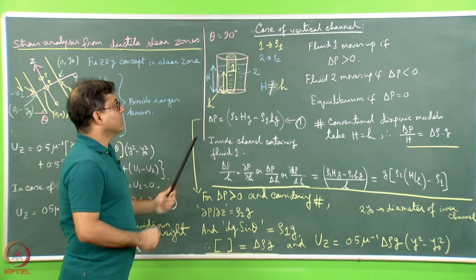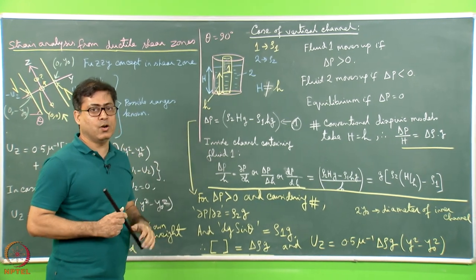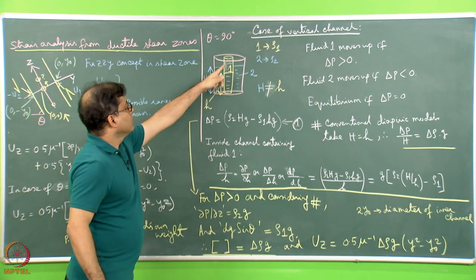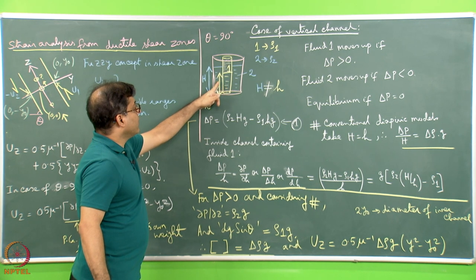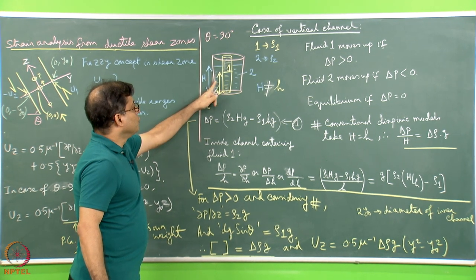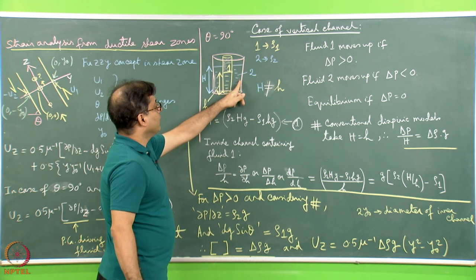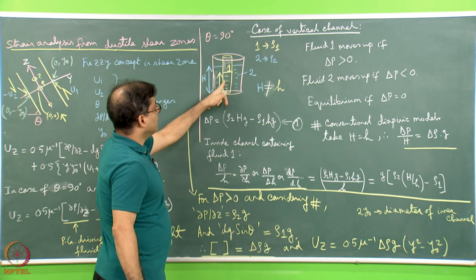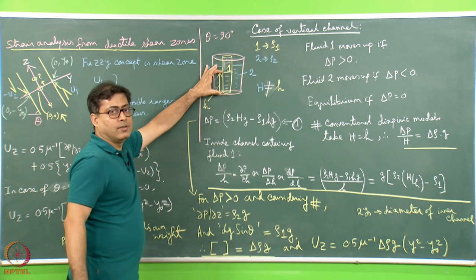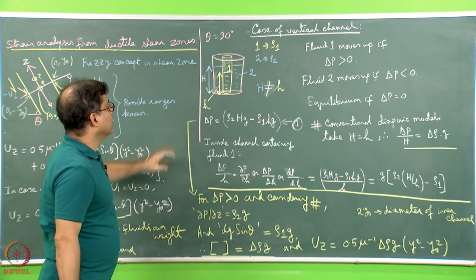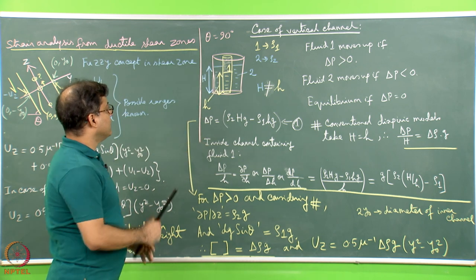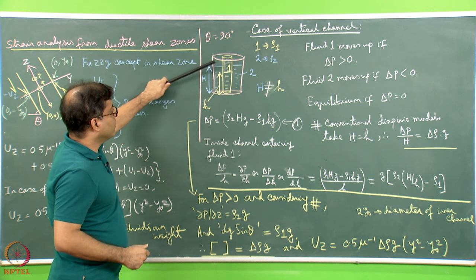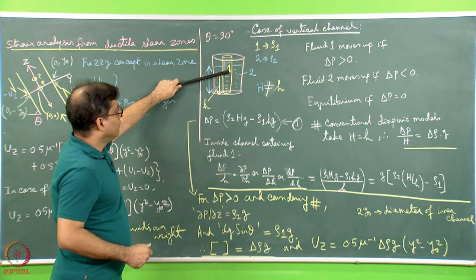One of the good examples of a vertical channel is the diapyrism or doming of salts, mud, etc. This channel 1 or tube 1 is inside tube 2. Within tube 2, a fluid 2 is filled up to a certain height, and inside tube 1, fluid 1 has been kept. I am considering a general case where the height capital H for fluid column 2 is more than the height of fluid column 1.